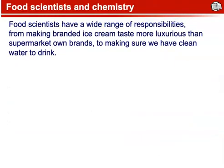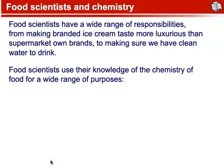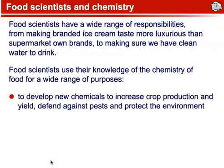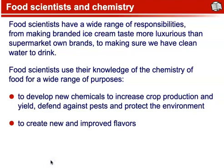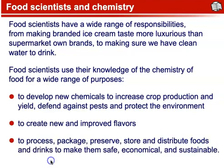Food Scientists and Chemistry. Food scientists have a wide range of responsibilities, from making branded ice cream taste more luxurious than supermarket brands, to making sure we have clean water to drink. Food scientists use their knowledge of the chemistry of food for a wide range of purposes, including to develop new chemicals to increase crop production and yield, defend against pests and protect the environment, create new and improved flavors, and to process, package, preserve, store, and distribute foods and drinks to make them safe, economical, and sustainable.